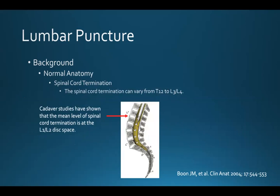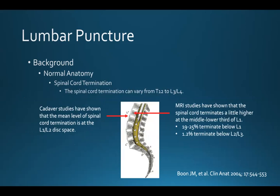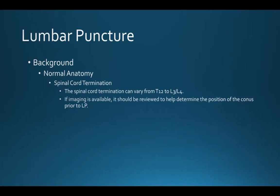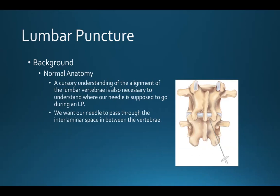The spinal canal termination varies in most people from T12 down to L3-4. Cadaver studies show the mean level of spinal cord termination is at the L1-L2 disc space. MRI studies have shown termination a little higher, at the middle to lower third of L1. Almost a quarter of patients will have their spinal cord terminate below L1, and about 1% terminate below L2-L3. If imaging is available, it should be reviewed to help determine the position of the conus prior to an LP.